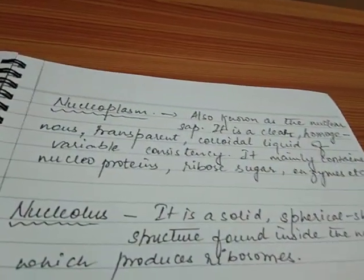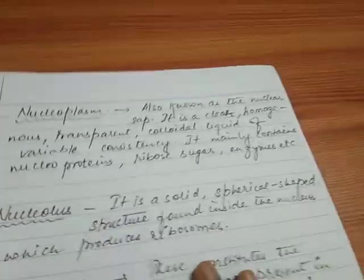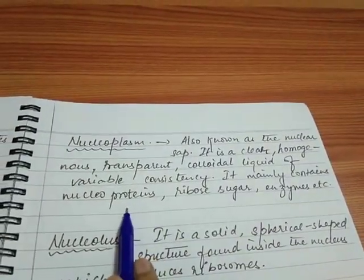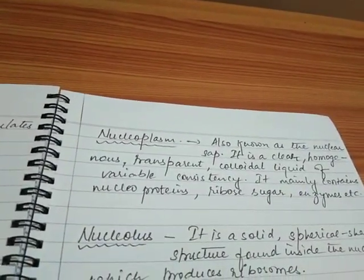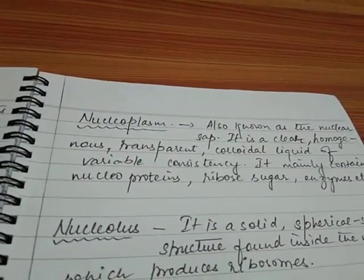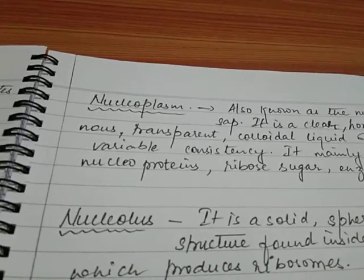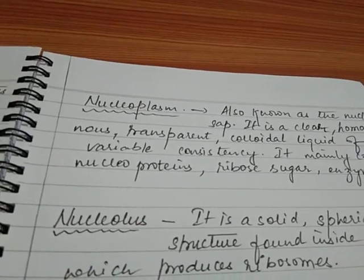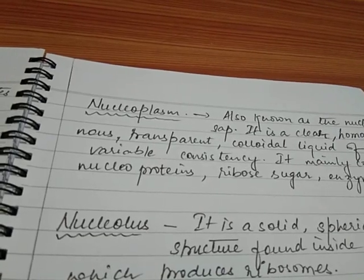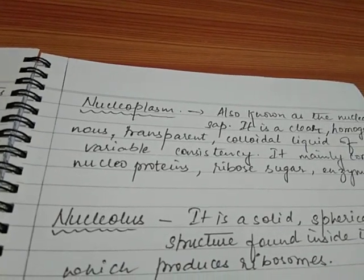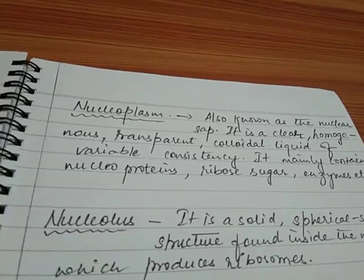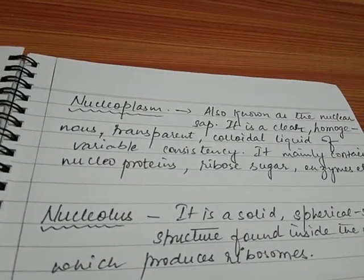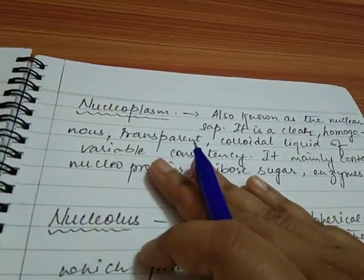In the nucleoplasm, you will mainly find nucleoproteins, ribose sugar, and enzymes. These are the main constituents to build the genetic material. The nucleus contains genes — the heredity factor which is transferred from one generation to another — and this gene is basically made up of DNA, deoxyribonucleic acid. This DNA is made up of ribose sugar, nucleoproteins, and so on. So all the materials needed to build the gene are present in the nucleoplasm.